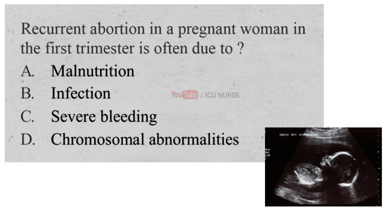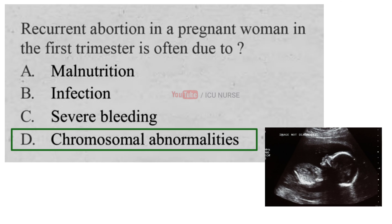Recurrent abortion in a pregnant woman in the first trimester is often due to: A. Malnutrition, B. Infection, C. Severe Bleeding, D. Chromosomal Abnormalities. And the correct answer is D. Chromosomal Abnormalities. About half of all miscarriages that occur in the first trimester are caused by chromosomal abnormalities. These might be hereditary or spontaneous, and may be in the father's sperm or the mother's egg.